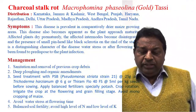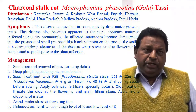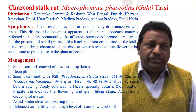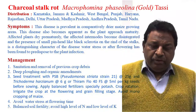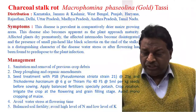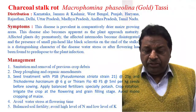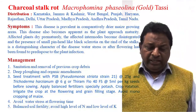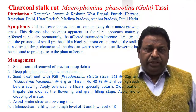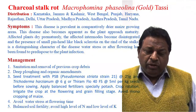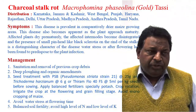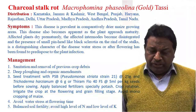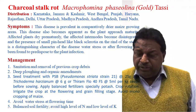Now coming to Charcoal Stalk Rot, which is also a soil-borne disease caused by Macrophomina phaseolina. This disease is very common particularly in Karnataka, Jammu and Kashmir, West Bengal, Punjab, Haryana, Uttar Pradesh, Madhya Pradesh, Delhi, and Rajasthan, which are major maize-growing states. The disease is prevalent in comparatively drier maize-growing areas. Affected plants dry prematurely.